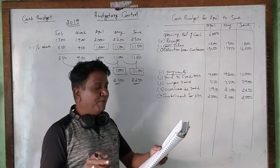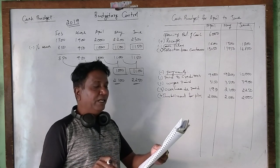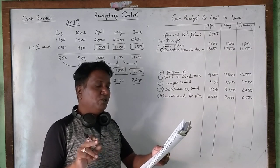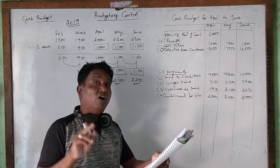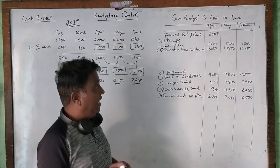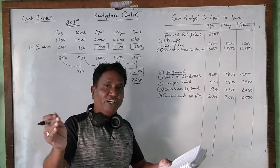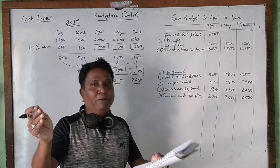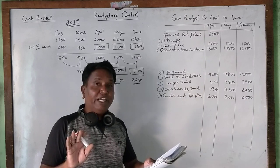Dividend at five percent on preference share capital of rupees two lakhs will be paid on the 1st of June. So preference share capital is two lakh rupees.